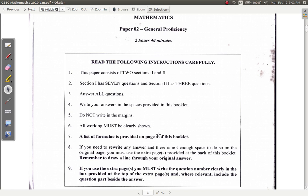You have a list of formulas on page four. If you need to rewrite any answer and there is not enough space to do so on the original page, you use the extra papers provided at the back of this booklet and draw a line through your original answer. And if you use extra pages, you must write the question number clearly in the box provided at the top of the extra pages.